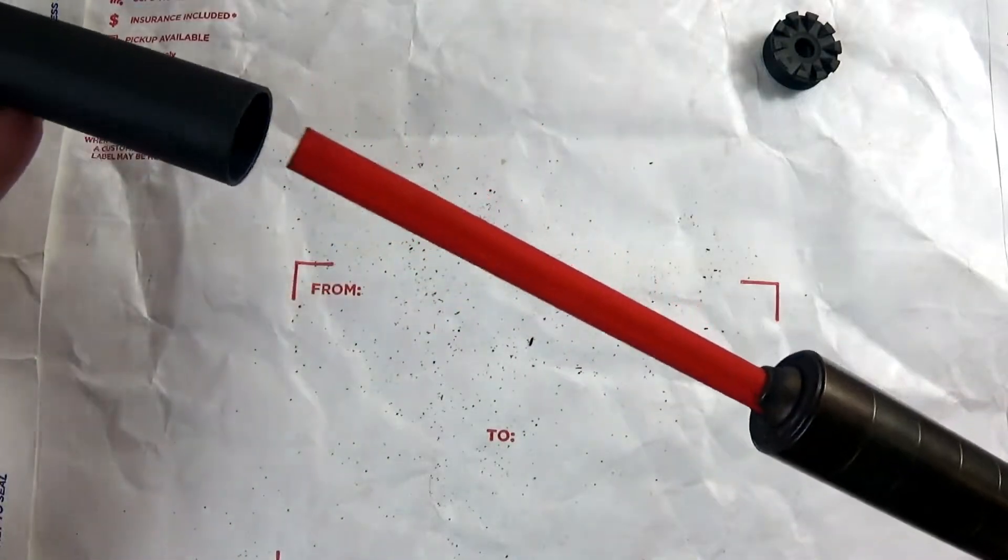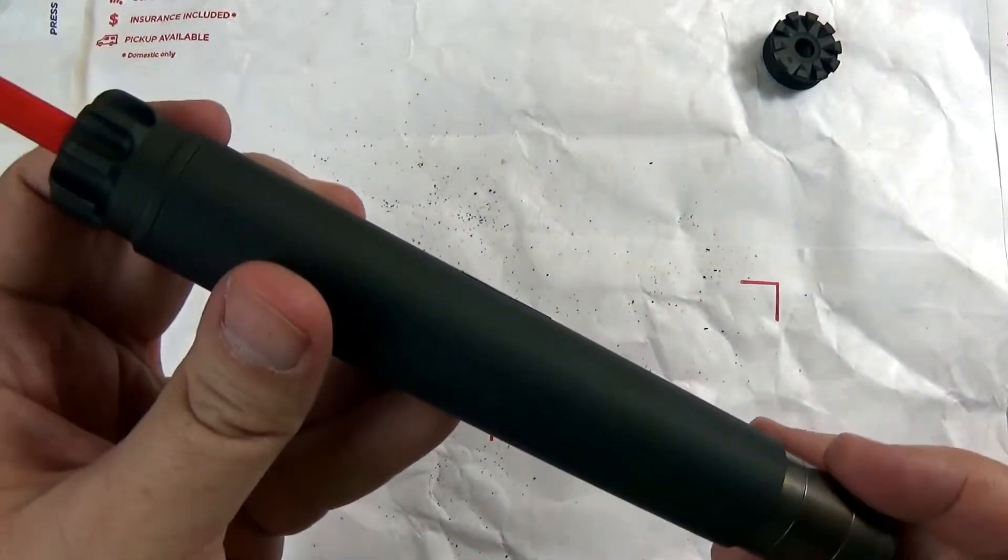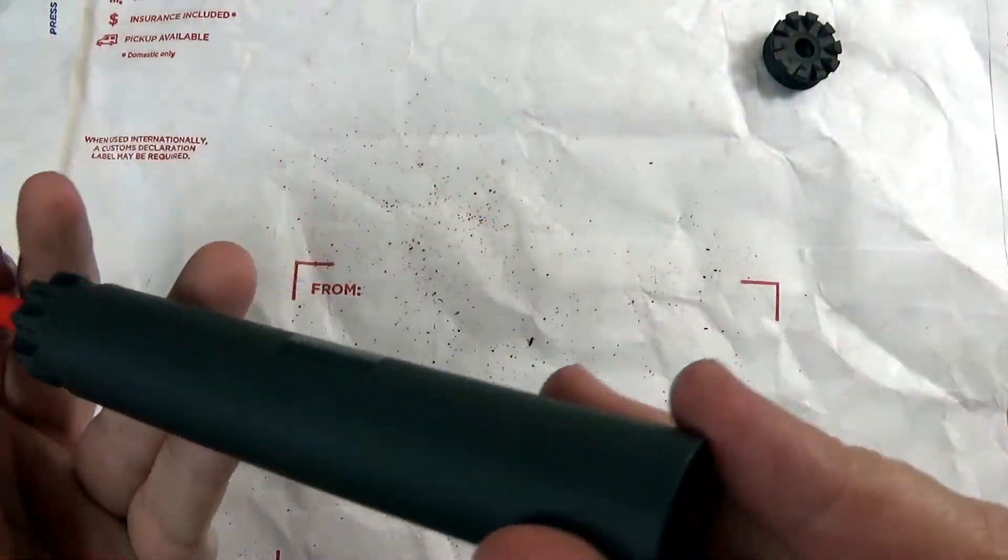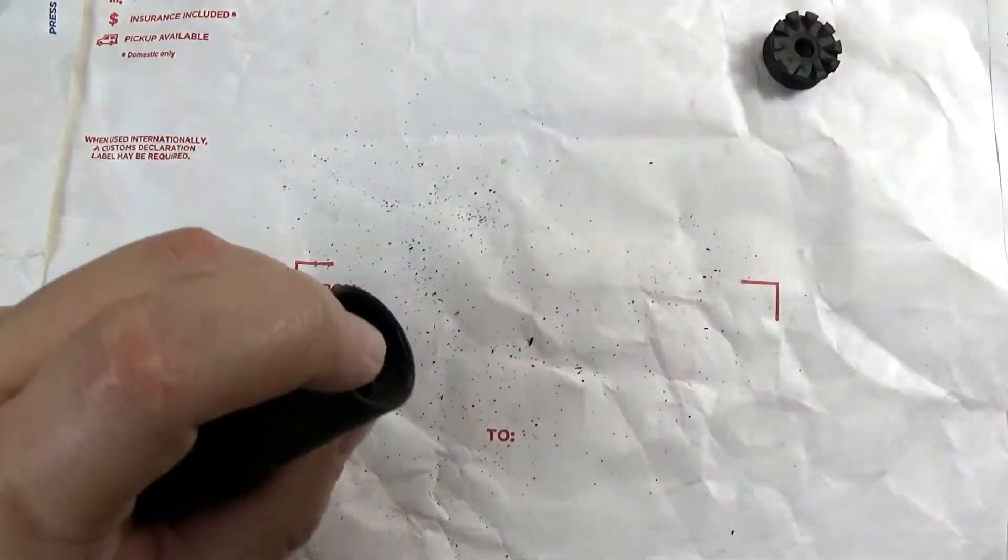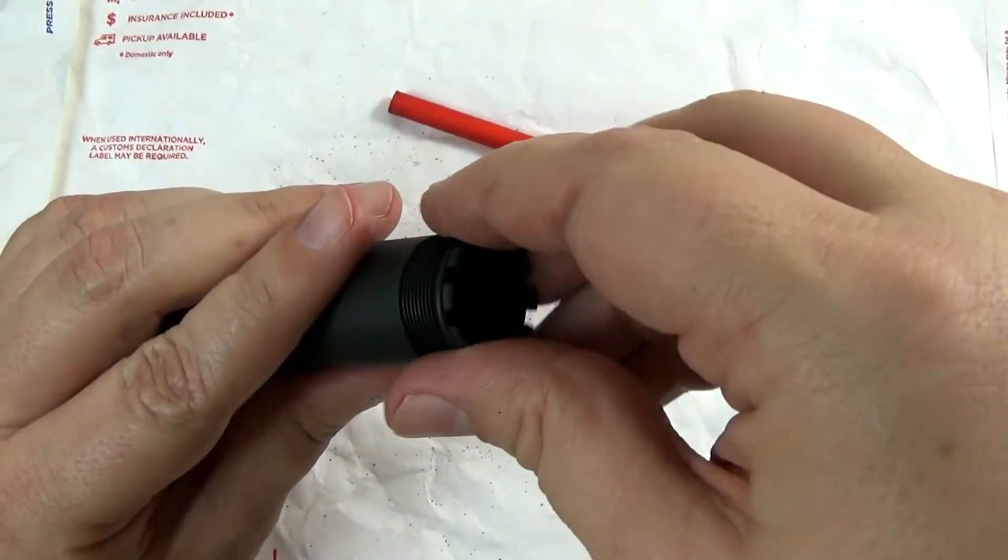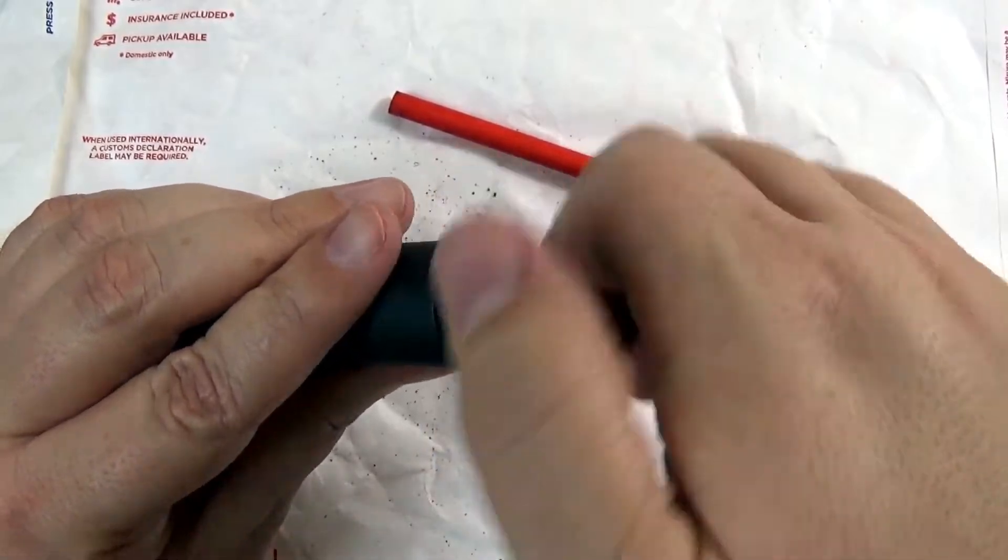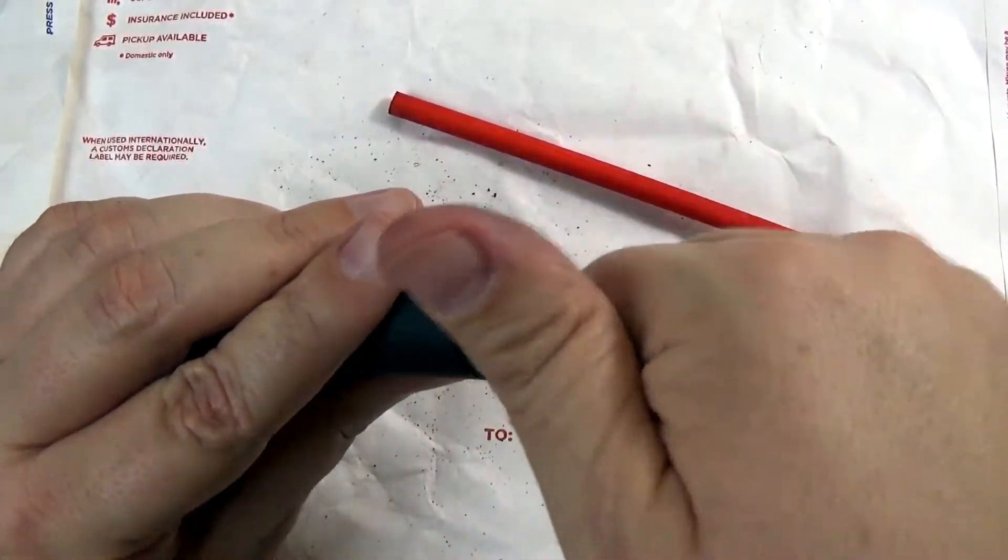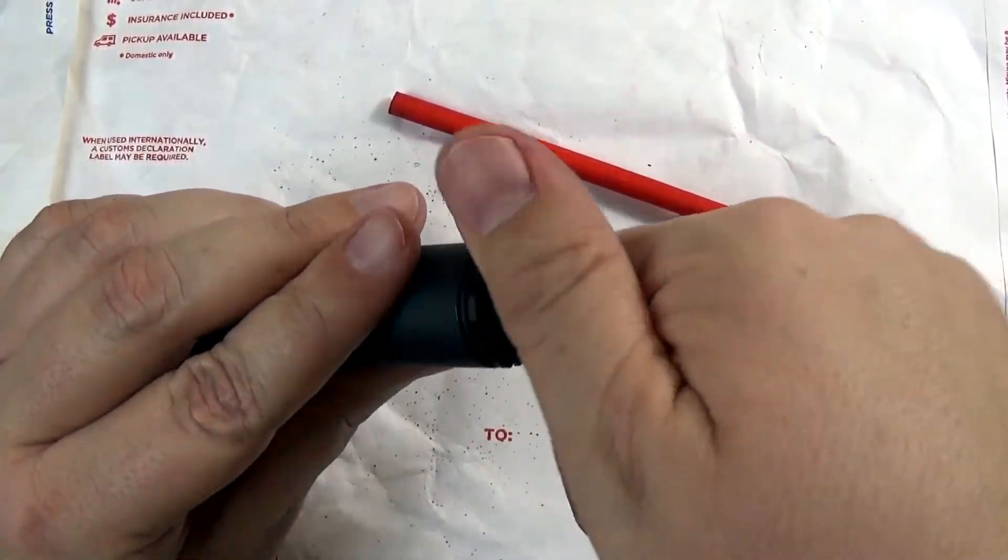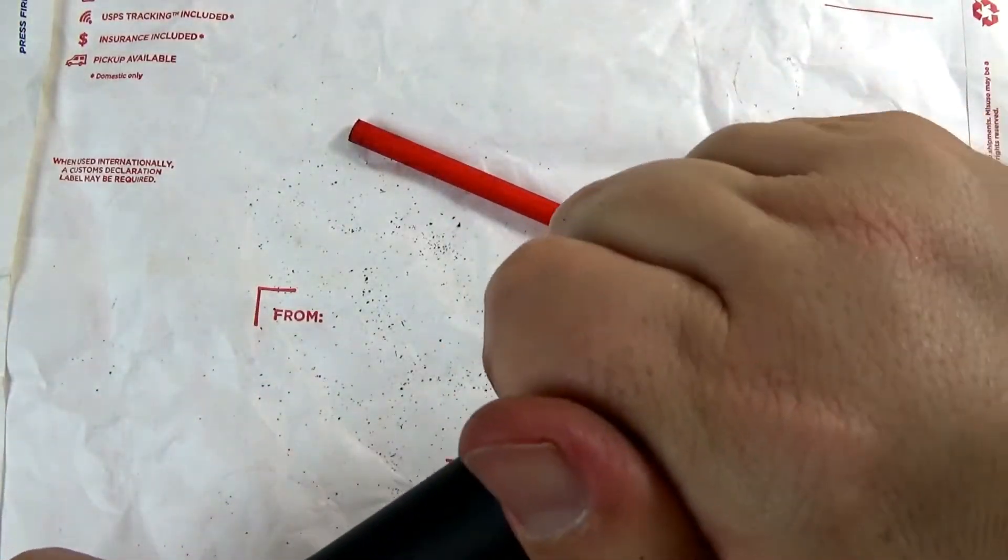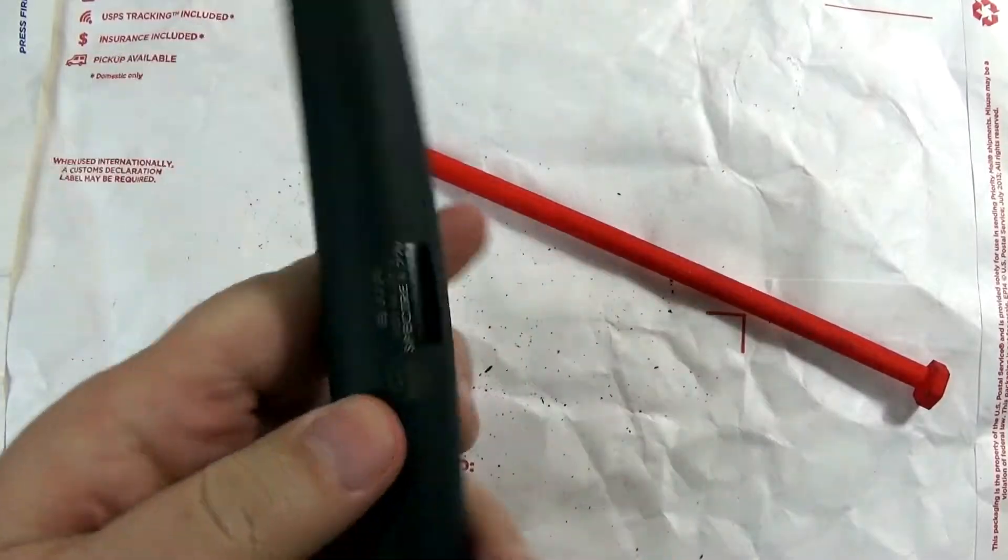Into your suppressor like so, and then of course you got to get it out of there. There you go, and it makes it a lot easier. You just drop the baffles on. Of course the suppressor is a little bit dirty as you see, and there you are—suppressor's together and ready to go.